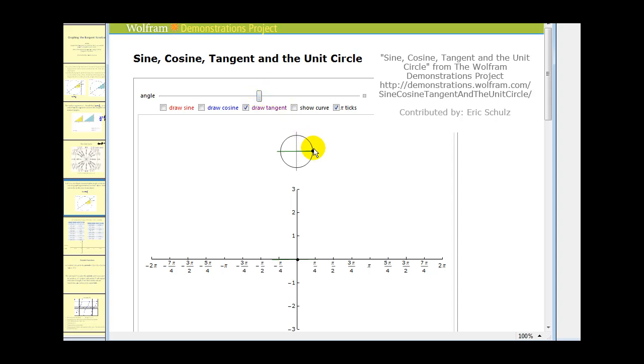If we look at the angle zero radians, this point would be one, zero, therefore y over x would be zero over one or zero.